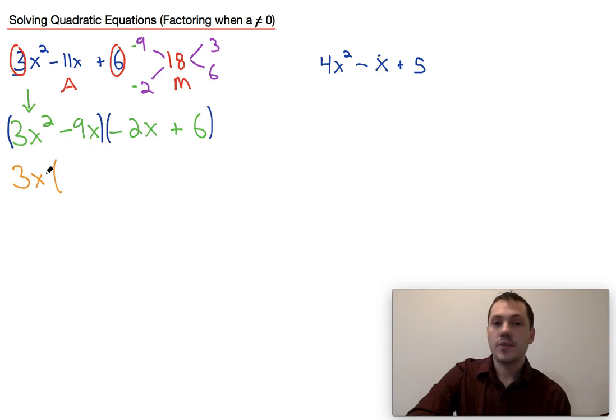Now if I take a 3x out of 3x squared, I'm left with x, and if I take a 3x out of negative 9x, I'm left with negative 3.